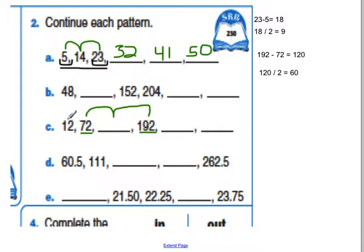If I do 12 plus 60, do I get 72? Yes, I do. If I do 72 plus 60, what do I get? 132. And then if I add 60 again, am I at 192? Yep, I am. So I think I'm doing this correctly.